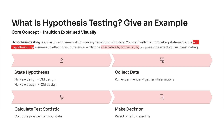Then there's the alternative hypothesis, which says the new design performs differently — maybe better, maybe worse. Here's the basic flow you see on the slide: state your hypotheses — what are you trying to compare? Collect data, run your experiment, and gather user behavior metrics.